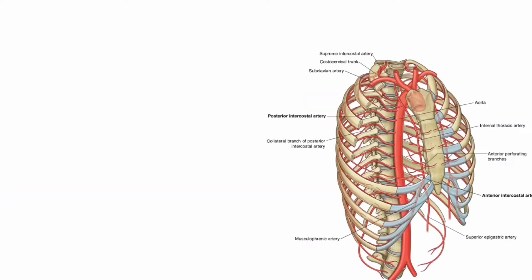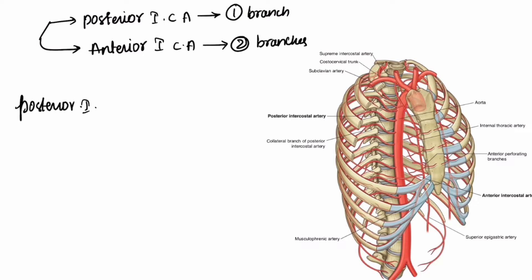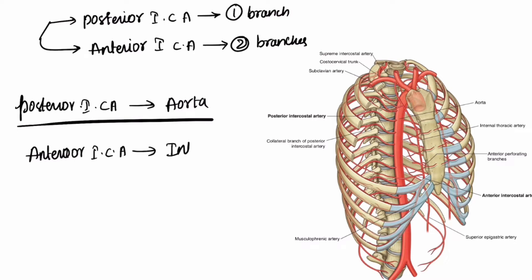Hello everyone. The topic for today is intercostal arteries. The main arteries of intercostal spaces are the posterior intercostal artery and the anterior intercostal artery. The posterior intercostal artery gives rise to one branch and the anterior intercostal artery gives rise to two branches. The posterior intercostal artery arises from the aorta, and the anterior intercostal arteries arise from the internal thoracic artery, also known as the internal mammary artery.